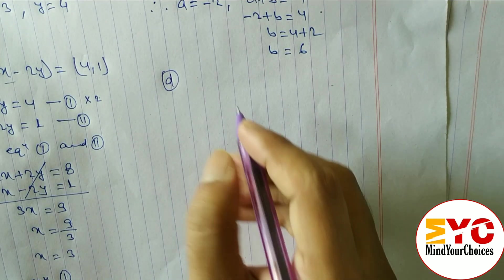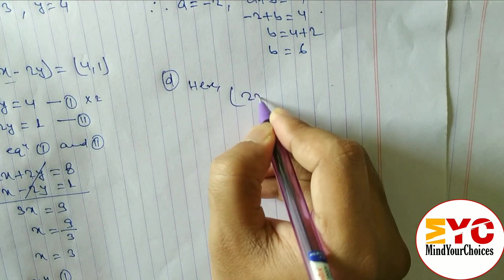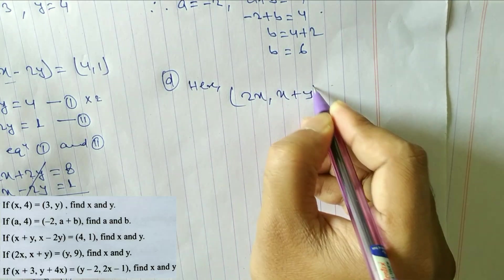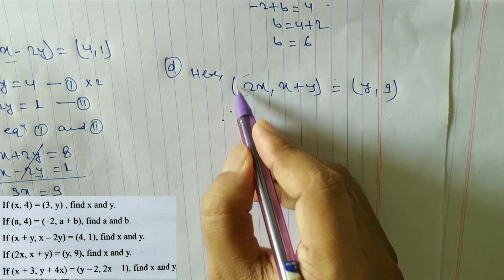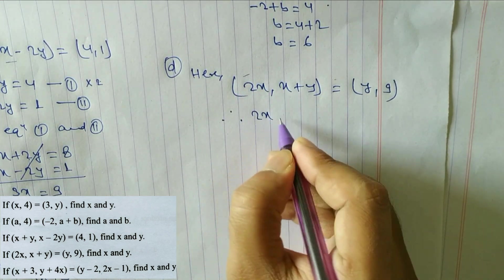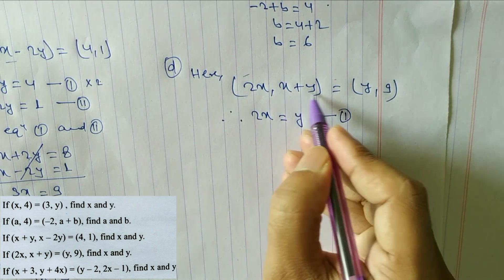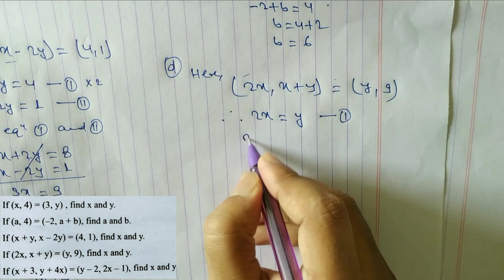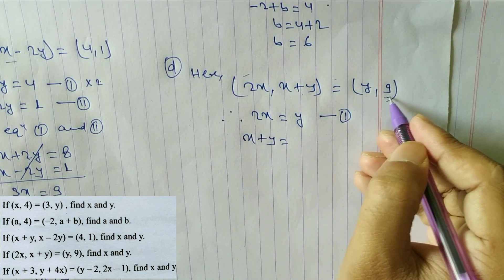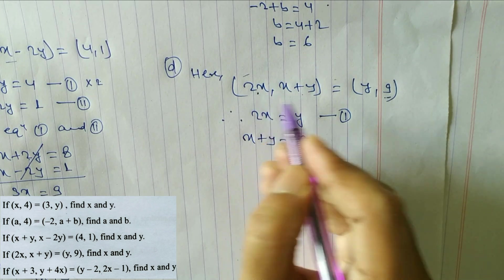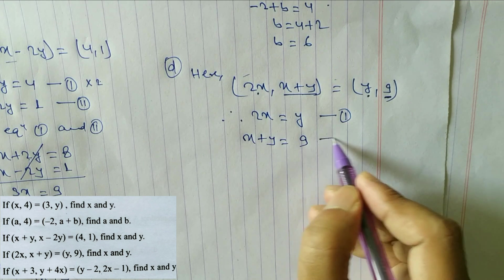Question d: the ordered pair is (2x, x+y) equal to (y, 9). Comparing x components: 2x is equal to y — equation 1. Comparing y components: x plus y is equal to 9 — equation 2.